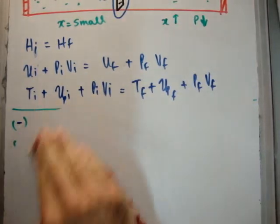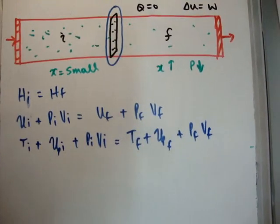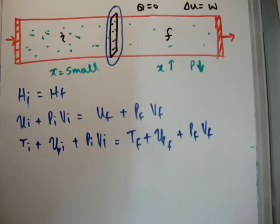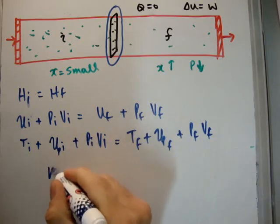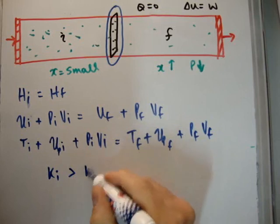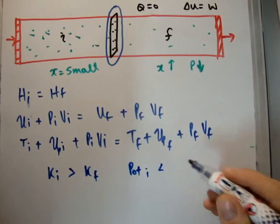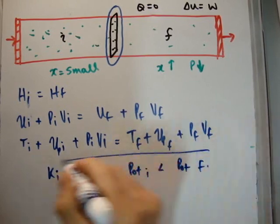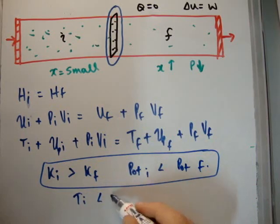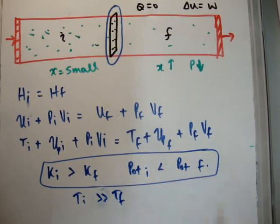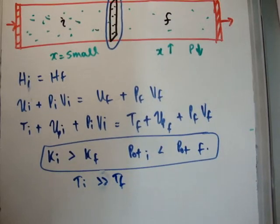So going back up here. We know that it's an isenthalpic process. But what we're saying here is that the pressure of the final state is going to be lower than the pressure of the initial state. And as a result, the potential energy term is going to be larger. So what's happened is, the kinetic energy term of the initial is greater than the kinetic energy term of the final, and the potential energy term of the initial is going to be less than the potential energy term of the final. And this means that the temperature initial is going to be much greater than the temperature of the final state. So your gas is after cooling down.